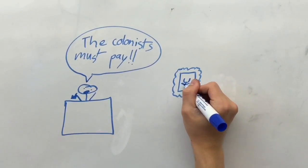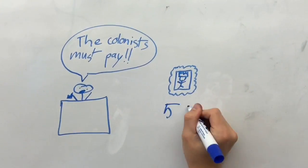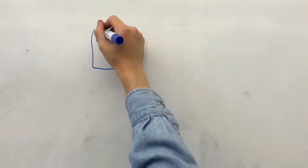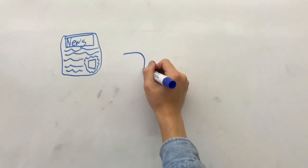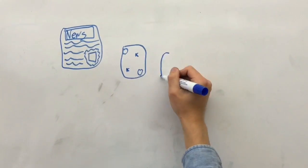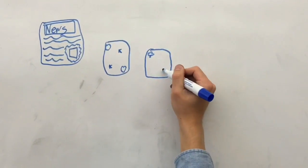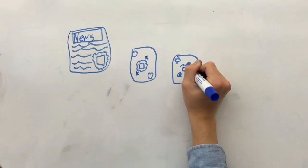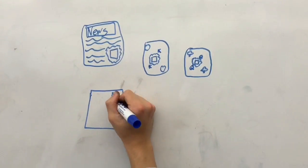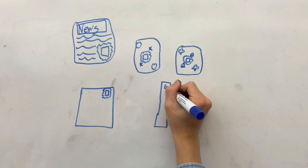Each stamp was five cents. These stamps were required on 50 various paper materials such as newspapers, playing cards, legal documents, and pamphlets.